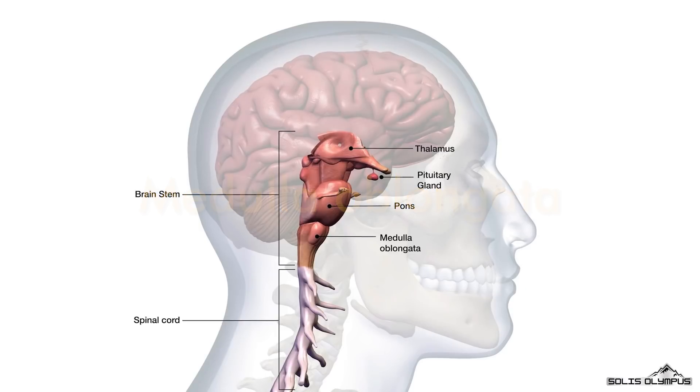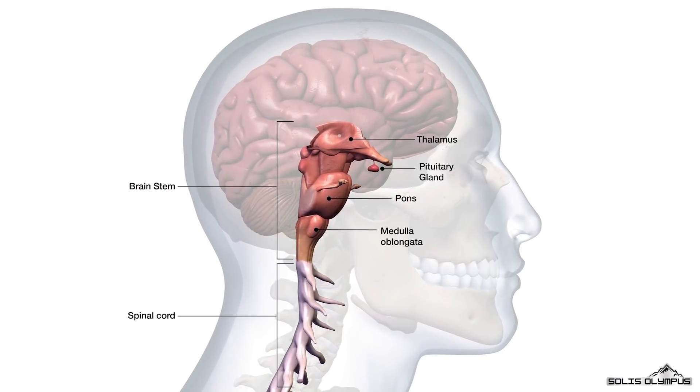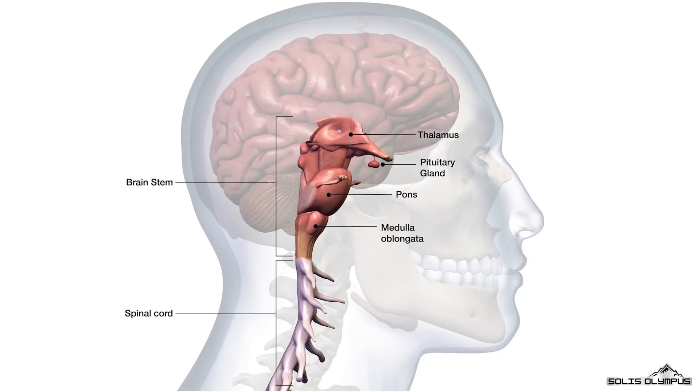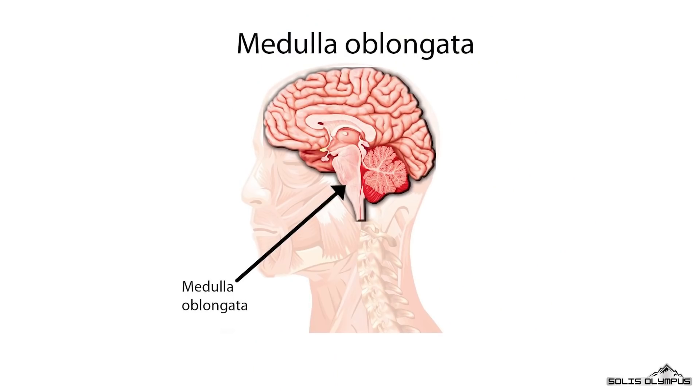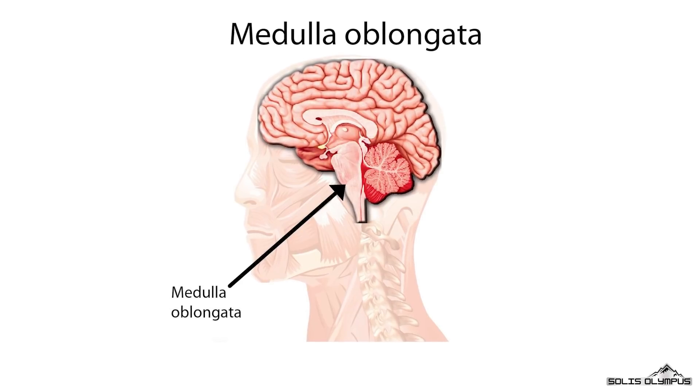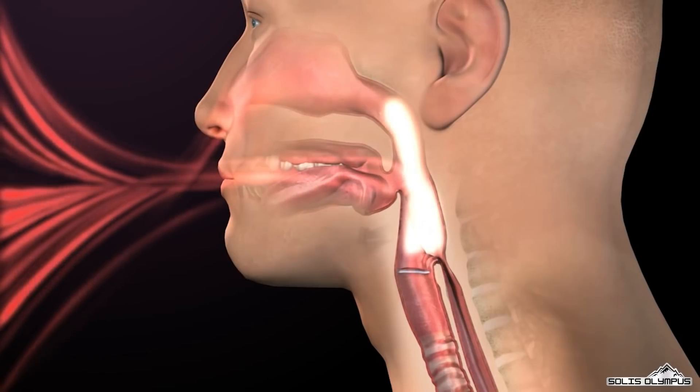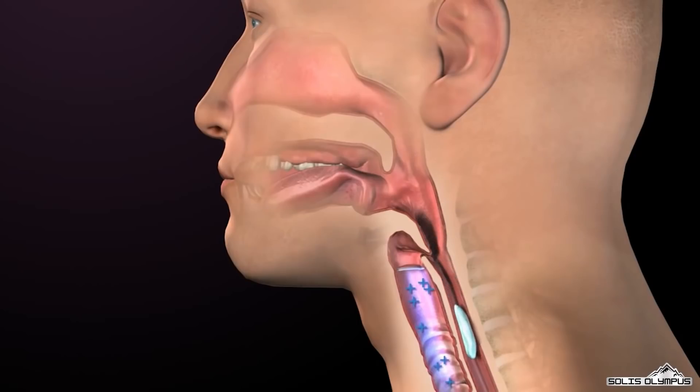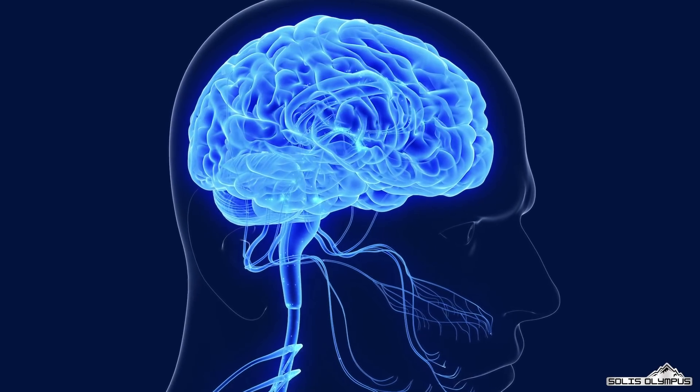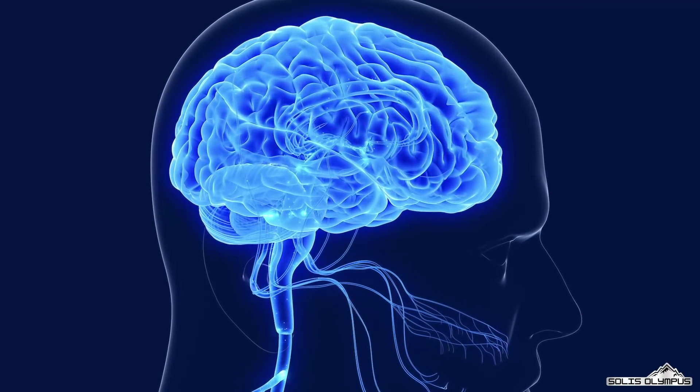Medulla oblongata. The medulla oblongata is located between the pons and the spinal cord. It is therefore the most inferior portion of the brain stem. Its functions are involuntary. We would not be able to live without the medulla because of the myriad of crucial tasks it performs, including breathing, blood pressure, cardiac rhythms, and swallowing. As a part of the brain stem, it also helps transfer neural messages from the brain to the spinal cord.